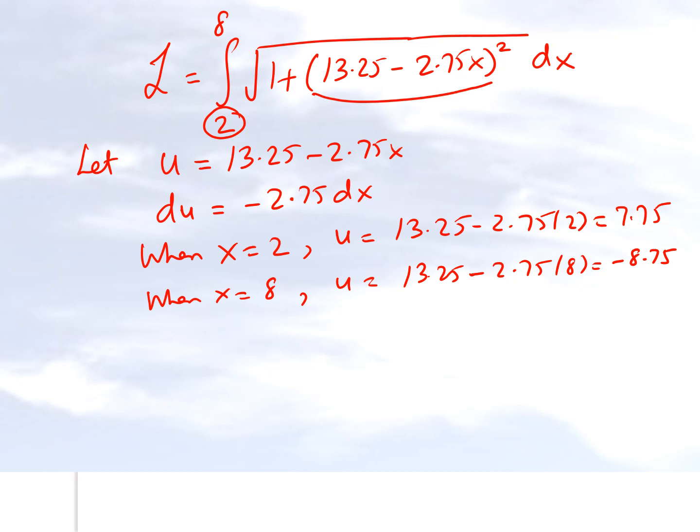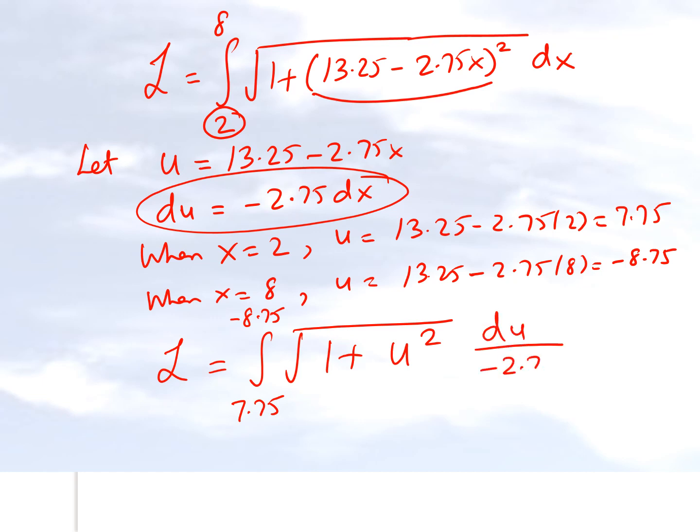Because of these numbers, we can rewrite our length of the path to be going from 7.75 to minus 8.75, since those are the new limits based on the value of u. The integrand is square root of 1 plus u squared, and for dx we substitute du divided by minus 2.75. Now we can look at a table and find the exact value of this integral.